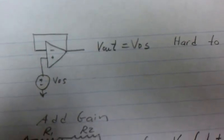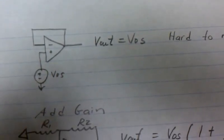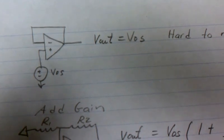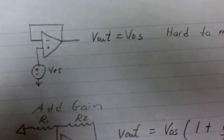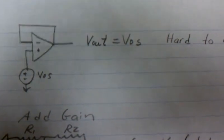Now this can be hard to measure because V offset is a small number and the reading would be bounced around by the noise of your equipment.